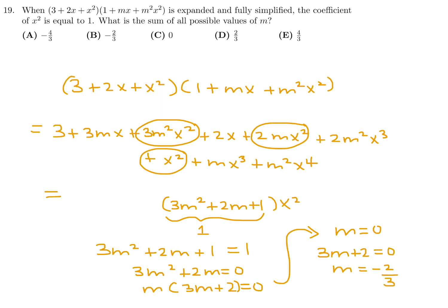That means m is either equal to 0 or 3m plus 2 is equal to 0. That would mean that m would be equal to minus 2 over 3. So the sum of all possible values of m. Here's one value. Here's another value. When I add those up, I get negative 2 over 3. So number 19. The answer is B.